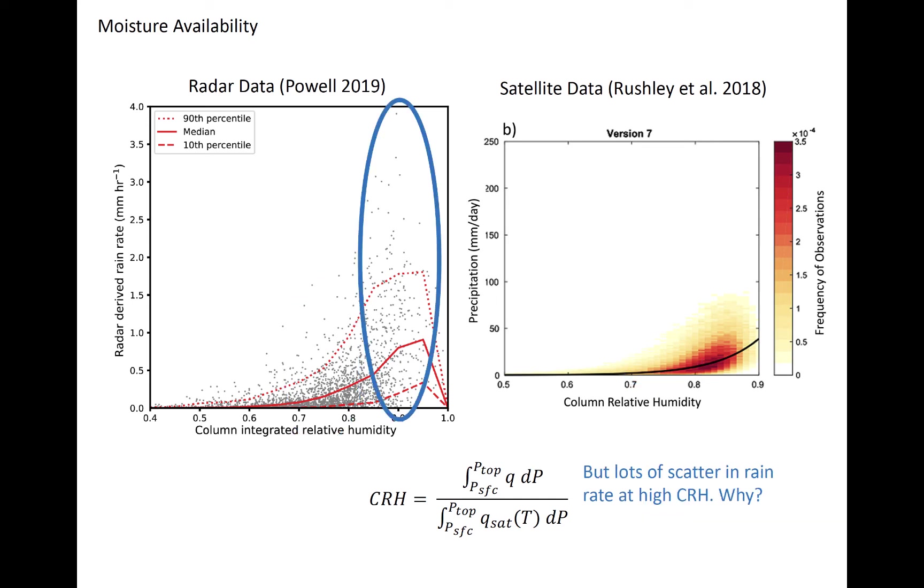Third, while large rain rates can occur at large CRH higher than about 80% or so, there are many instances of little to no rain occurring in what is a very moist environment. Therefore, we can say that a moist atmosphere is a necessary, but by itself insufficient condition for widespread heavy rain to occur. This might happen because the other factors that are important for deep convection to form are unfavorable. Perhaps the environment is too statically stable, or perhaps there is insufficient low-level forcing to support deep convection. The reasons for the scatter that you see here and all the different rain rates at the same values of CRH is still an active topic of research.